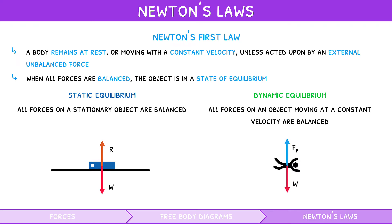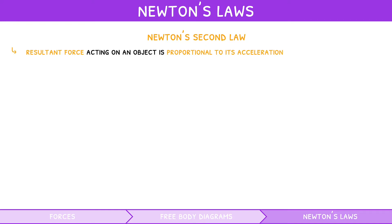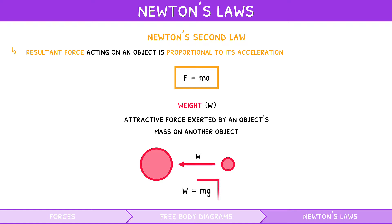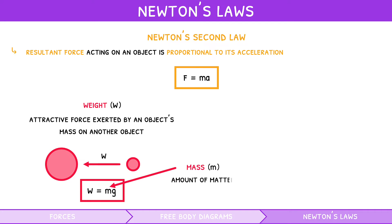But what if an object is acted upon by an unbalanced force? Cue Newton's second law. Newton's second law states that the resultant force on an object is proportional to its acceleration. This can be mathematically expressed as force equals mass times acceleration. Note, there is a second better definition which will be explored in the fifth IB Physics Topic 2 video. The main force used in mechanics is weight. Since this is the attractive force exerted by an object's mass on another object, the formula for weight is mass times gravity. Note, this is to be distinguished from mass, which is simply the amount of matter an object contains.